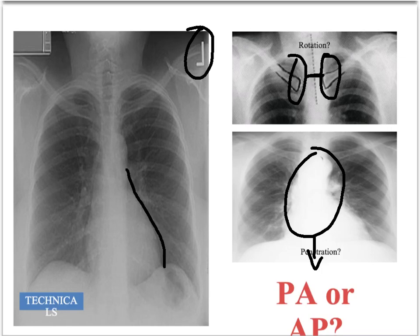All these things — correct orientation, rotation, and penetration — you will be expected to comment on when interpreting X-rays. The final technical consideration is whether this is a PA or AP X-ray. PA stands for posterior-anterior, AP for anterior-posterior. The first letter refers to where the X-ray is shot from, and the second refers to where the film is.